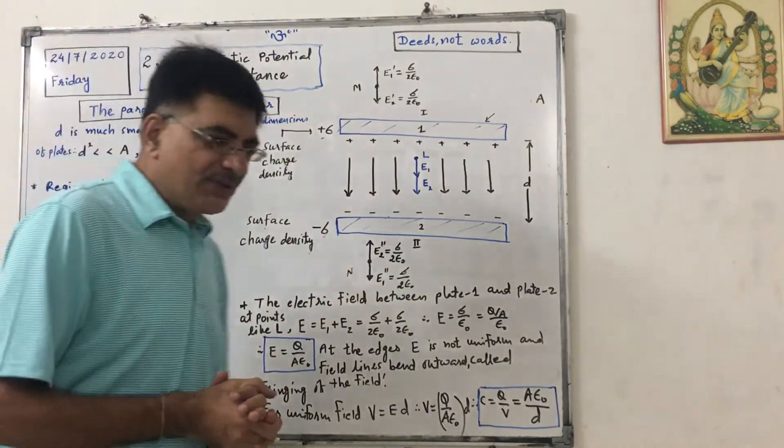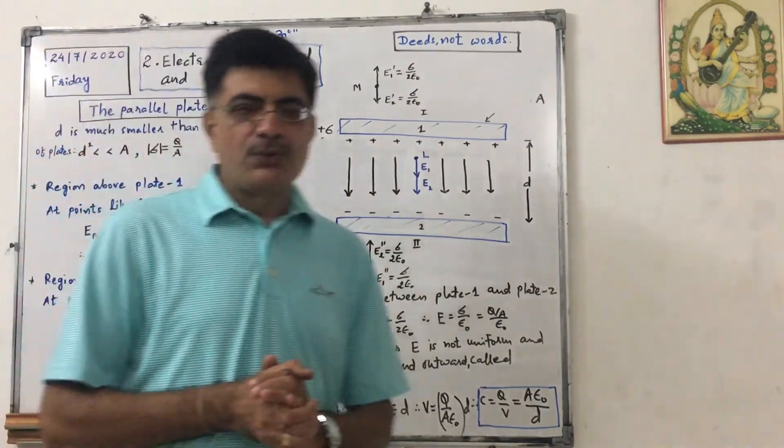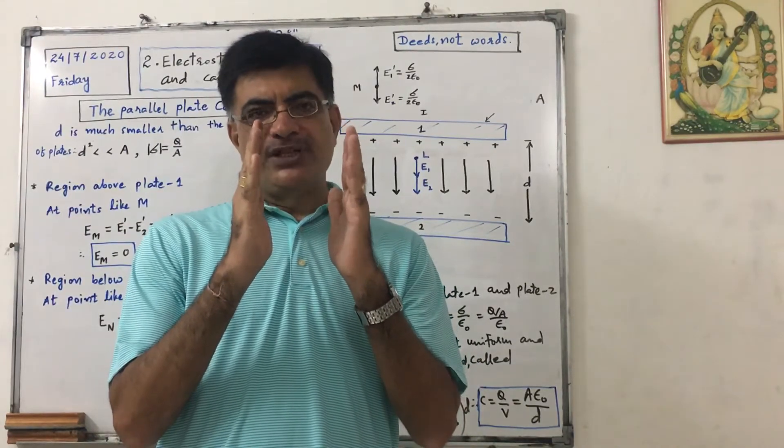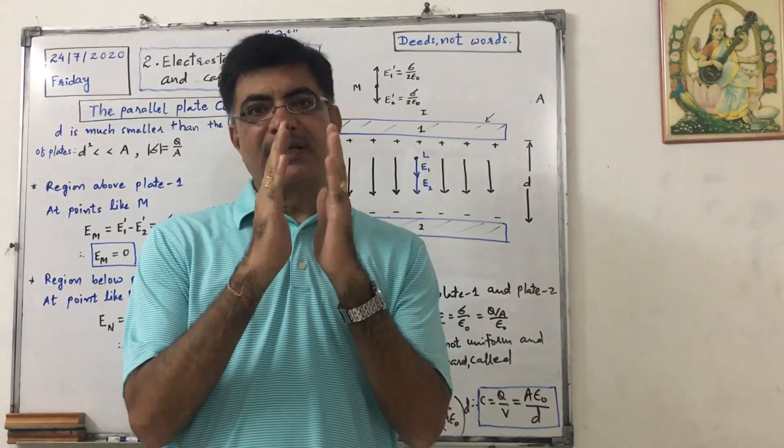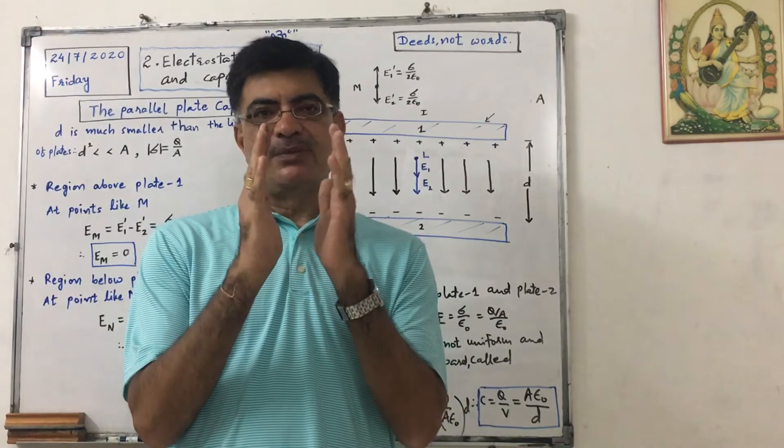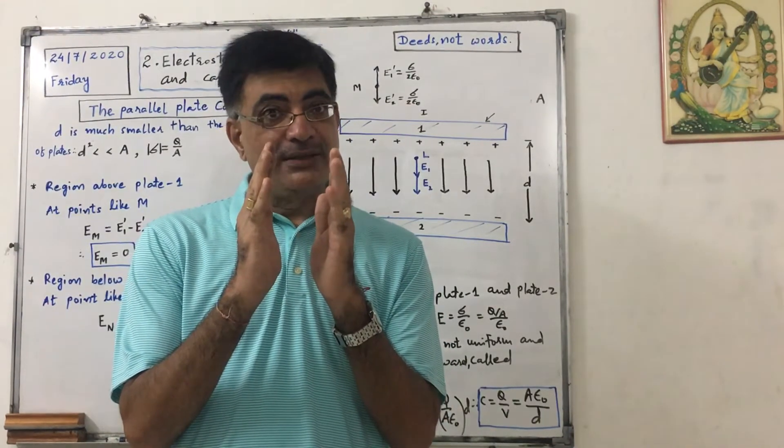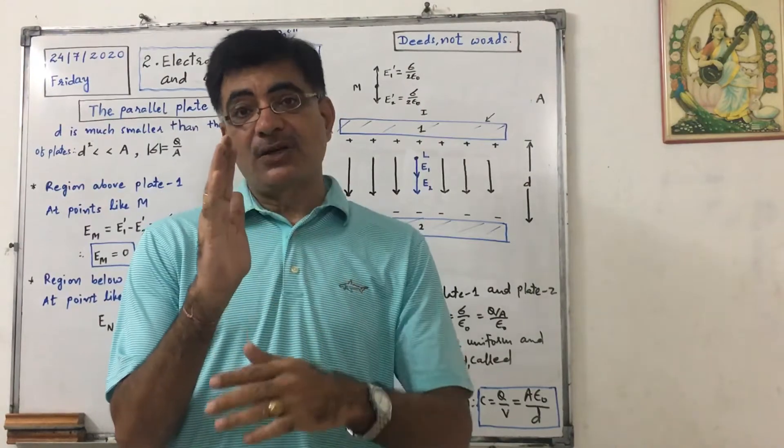Parallel plate capacitor means we have to take two plates and put them parallel to each other such that the distance between two plates must be negligible compared to the dimensions of the plates.